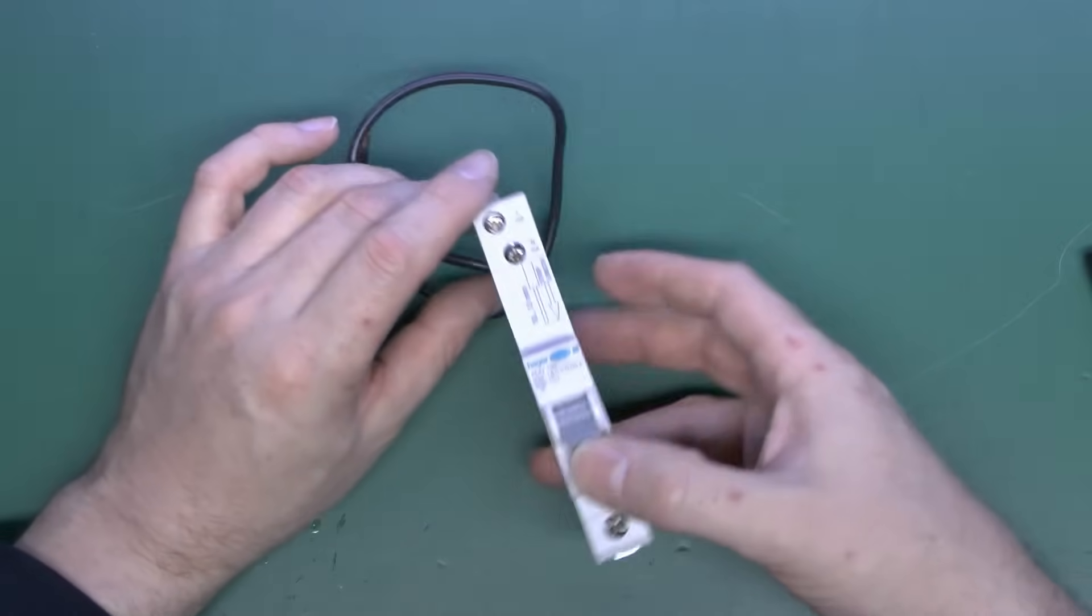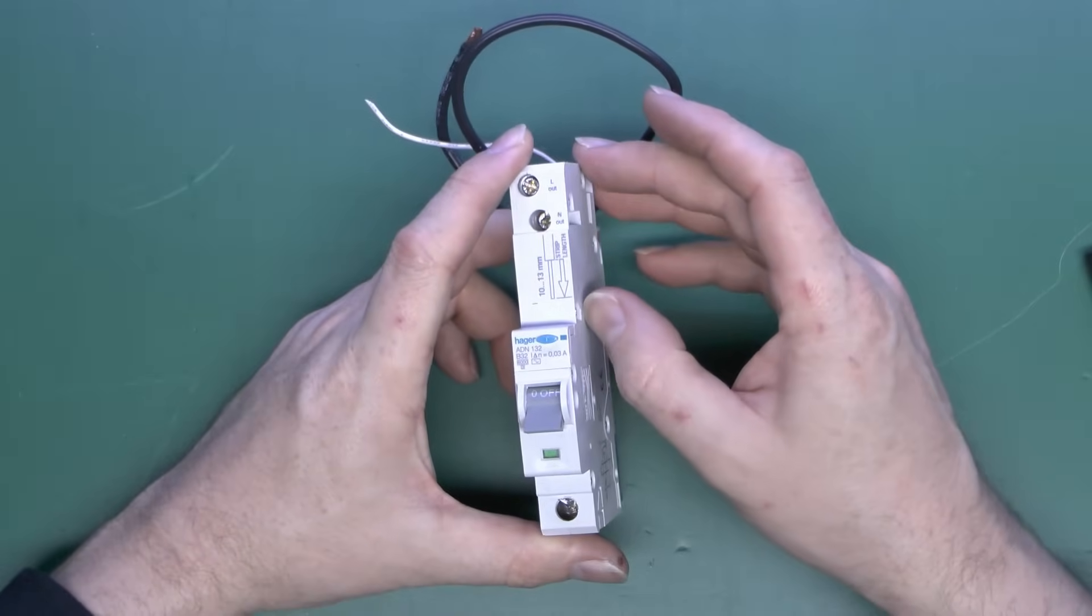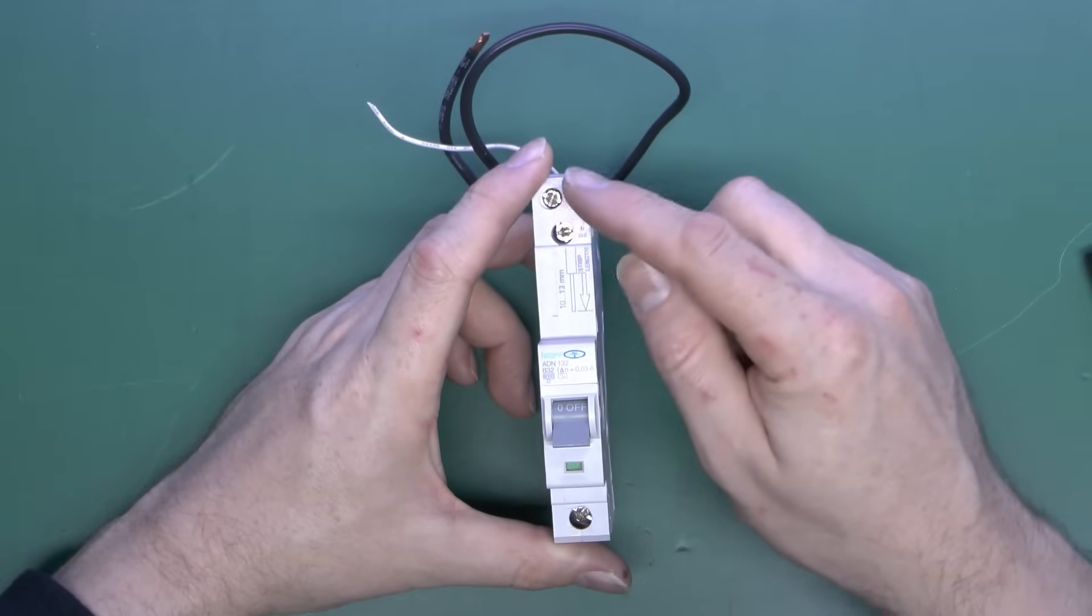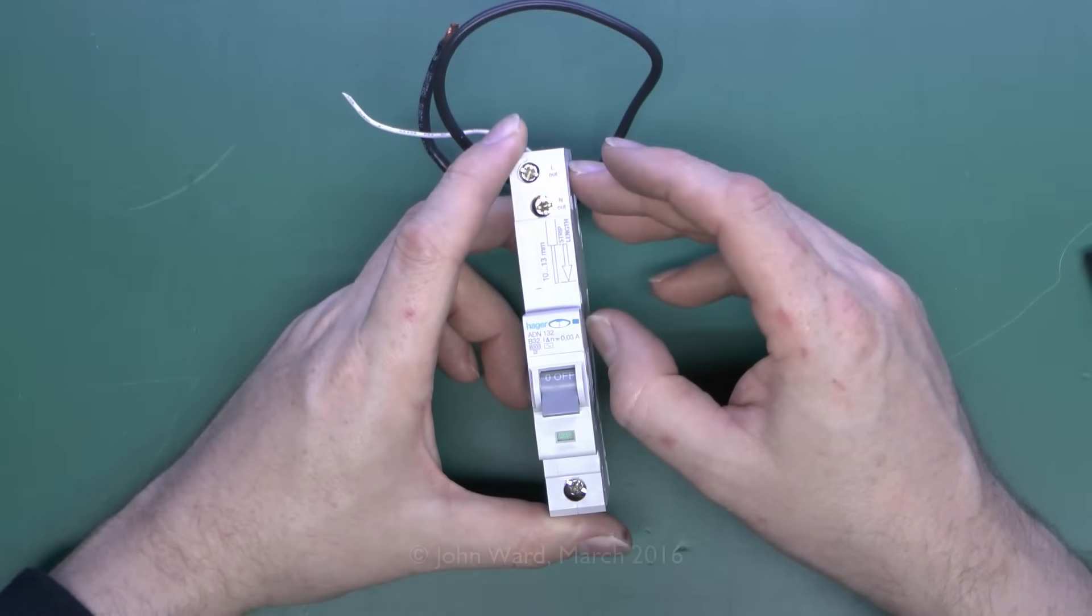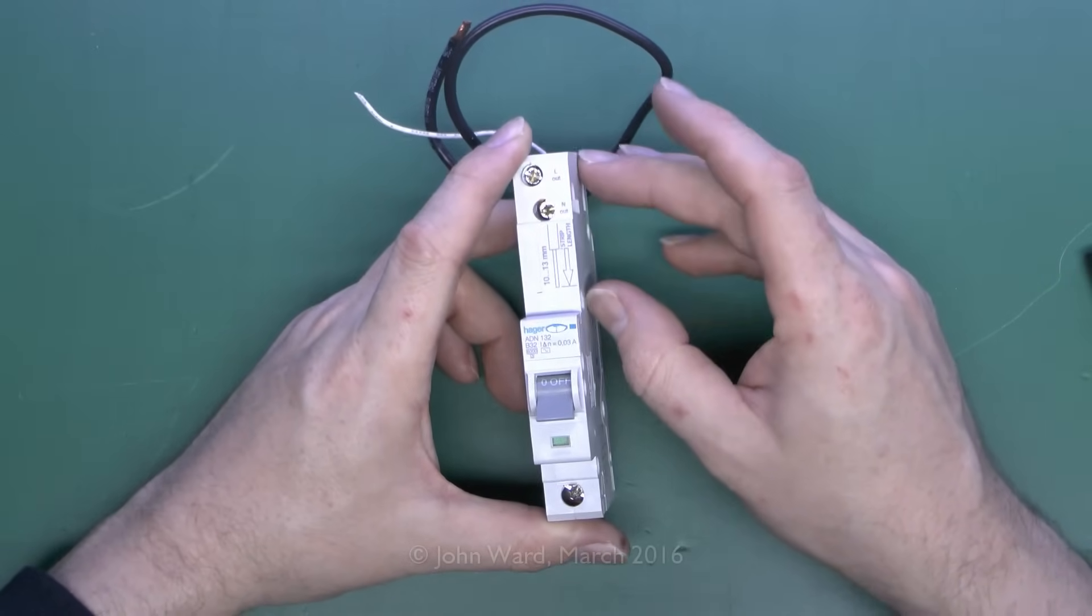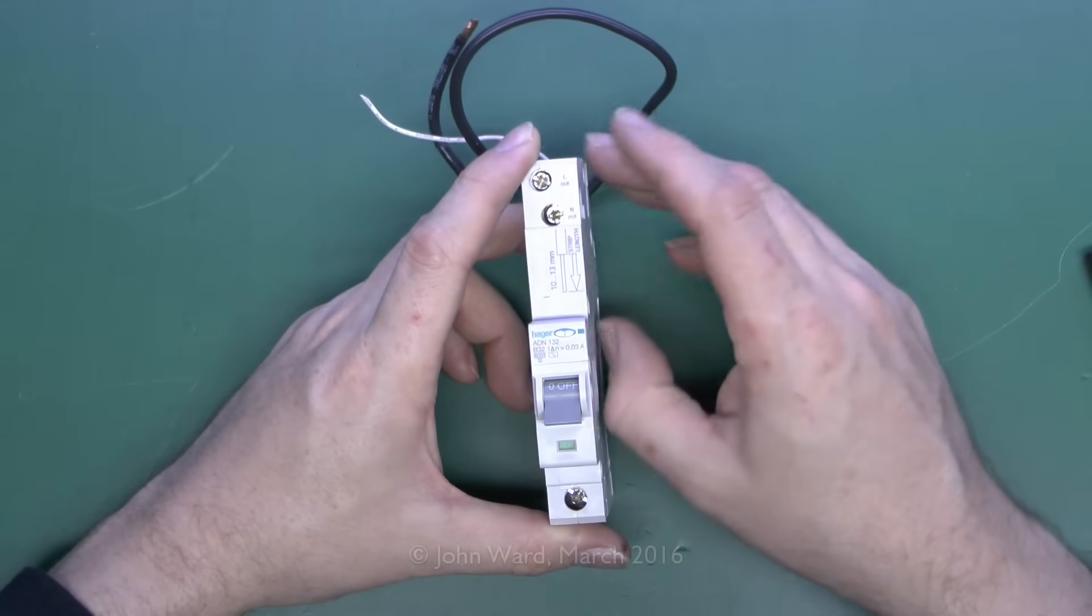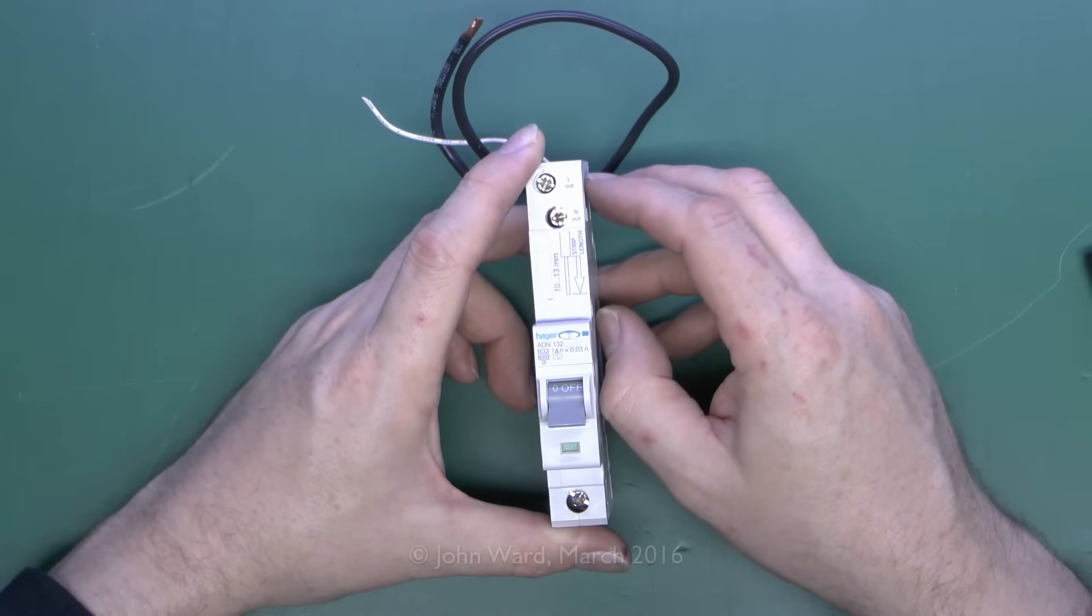And it's got the RCD functionality built into the top, and that's the part which monitors the current on the line and the neutral, and then will trip the device if there's any imbalance detected, and in this case an imbalance of 30 mA or more.